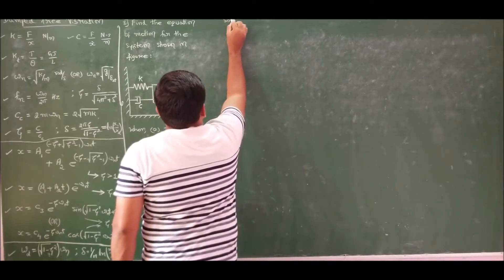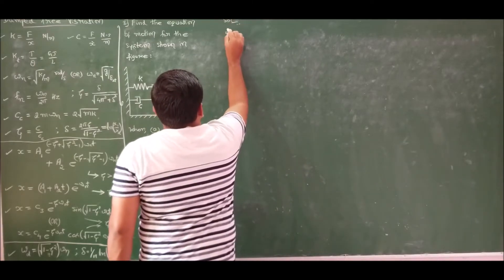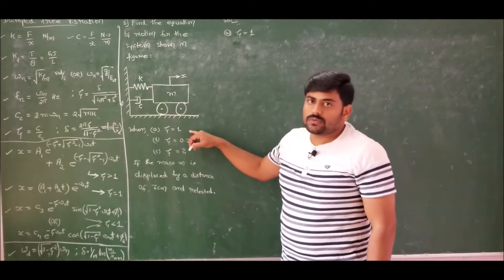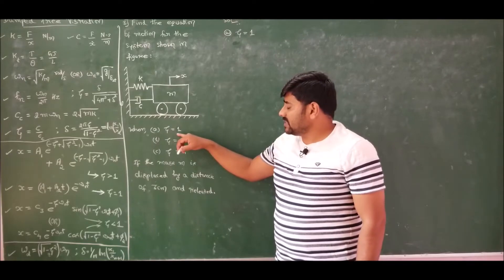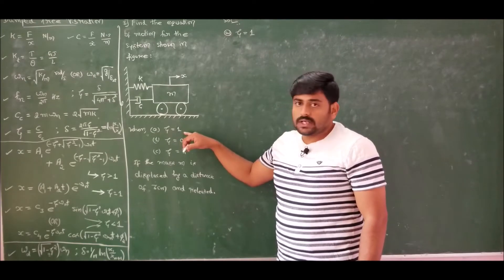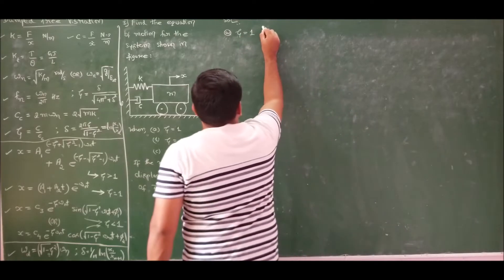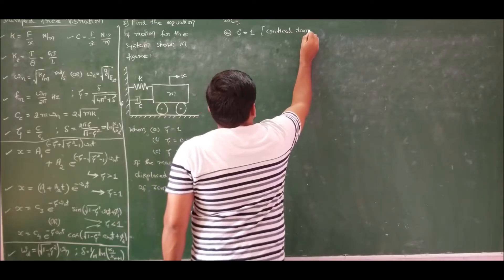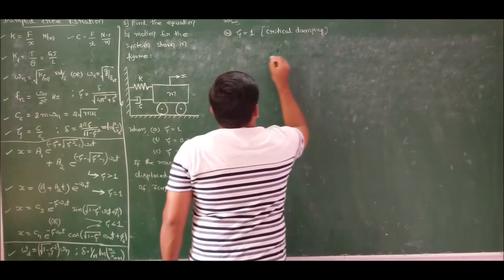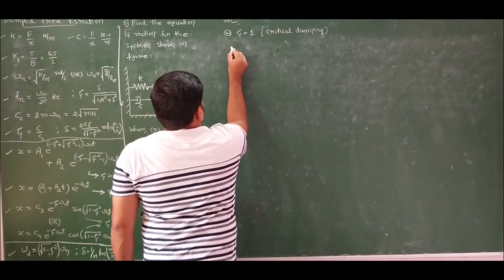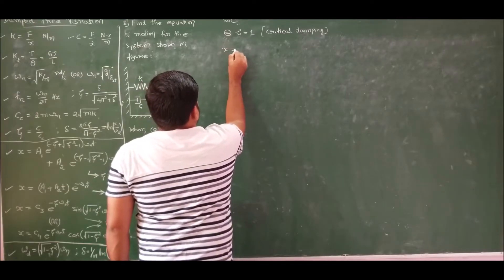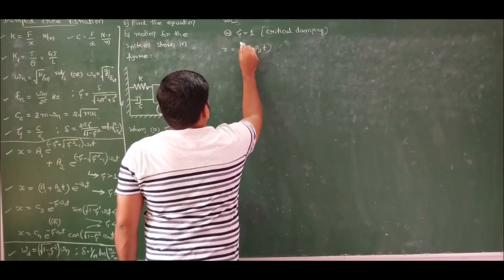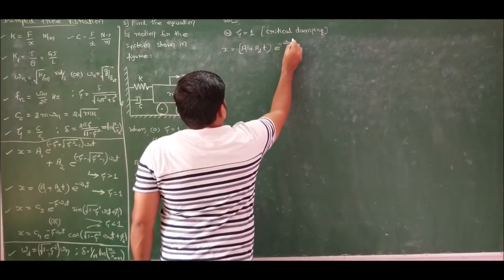In case A, the value of the damping factor or damping ratio is equal to 1. Whenever the damping ratio is equal to 1, it is a case of critical damping. For critical damping, the system response is: x equals (a1 + a2·t)·e^(−ωn·t).